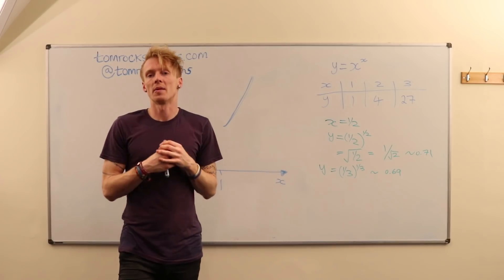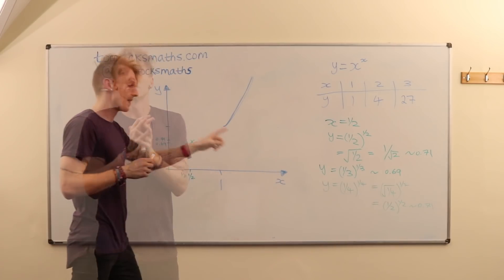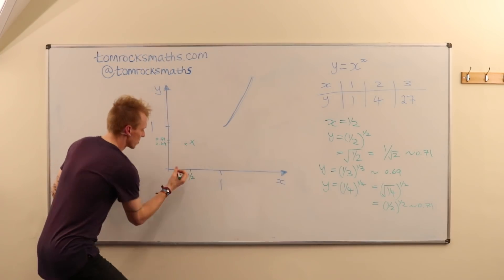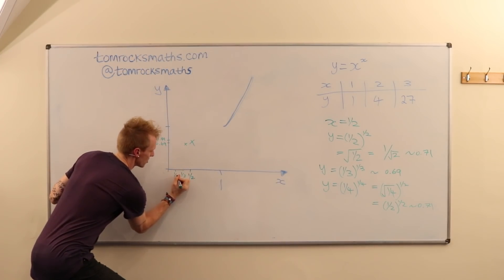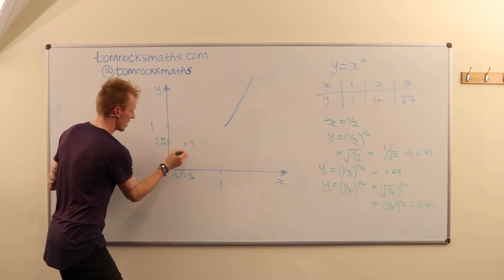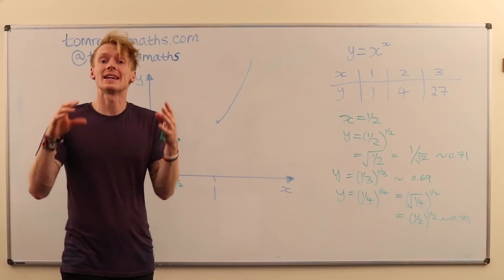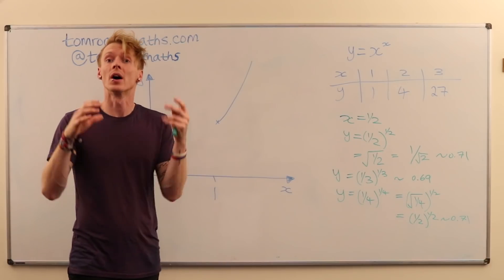So let's consider a third point. What about 1/4? And this is a very interesting point because we've decreased x even further down to 1/4. But our y value has actually increased a little bit again. What we've actually found here is the turning point of our graph.